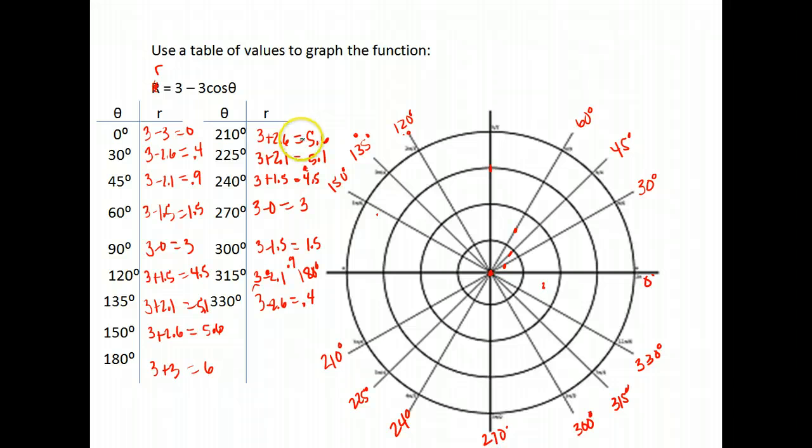We're going to start coming back in now so at 210 we were at 5.6 so we open all the way up to 210 and go out to 1, 2, 3, 4, 5.6. And then at 225 we are at 5.1 so we open all the way up to 225 and go out 1, 2, 3, 4, 5.1, about there-ish.